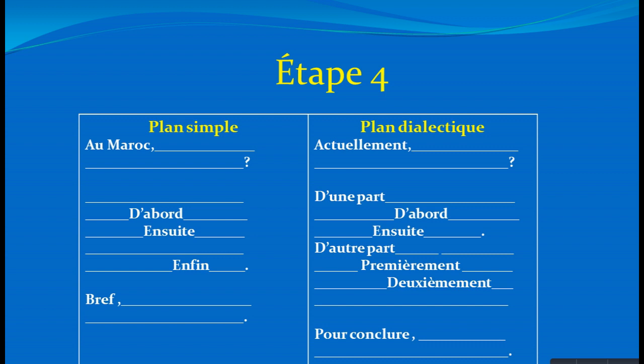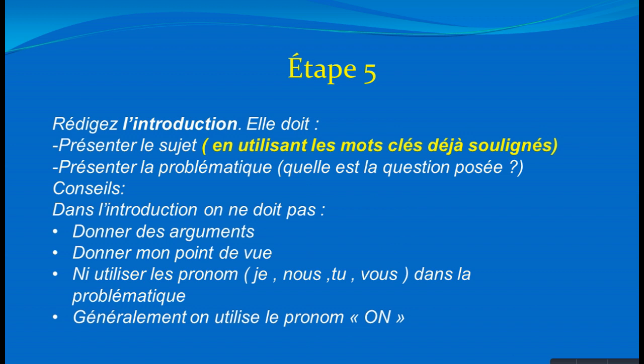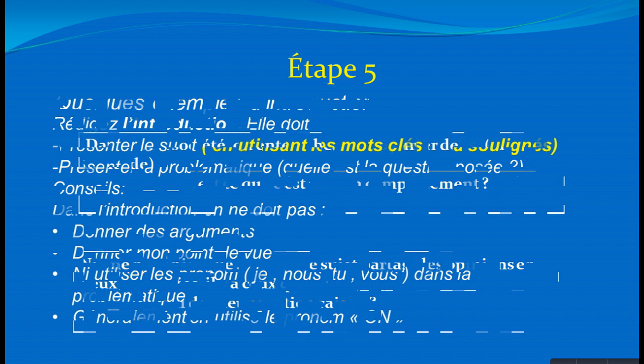Cinquième étape : rédiger l'introduction. L'introduction doit se composer des mots clés que j'ai soulignés après la lecture du sujet. La deuxième partie présente la problématique, c'est-à-dire une question à laquelle je dois répondre dans mon développement. Dans l'introduction, on ne doit pas donner des arguments ni utiliser un autre point de vue, et on évite les pronoms je, nous, tu, vous — surtout dans la problématique. On utilise généralement le pronom on, qui se conjugue comme il au singulier.